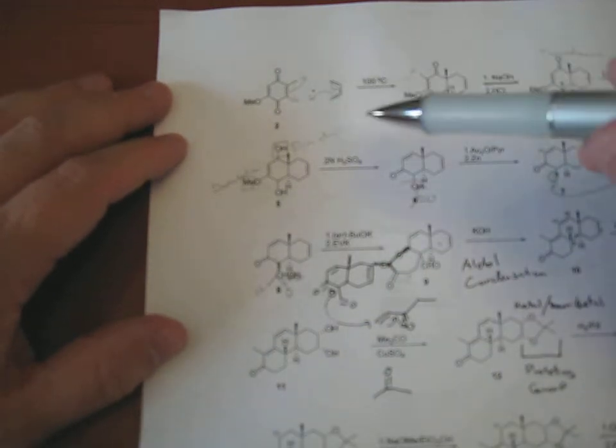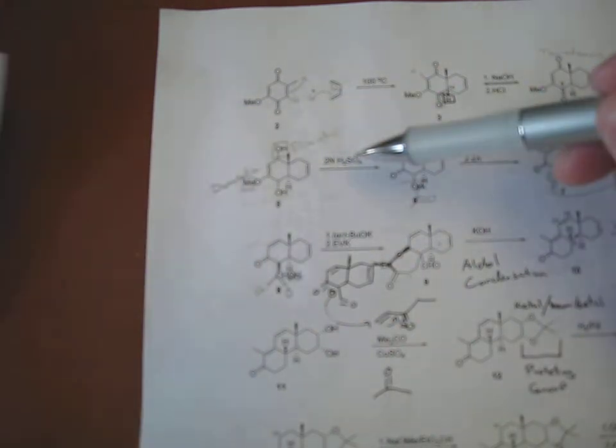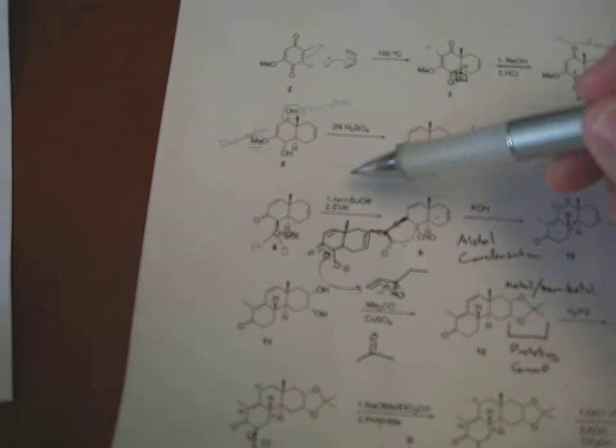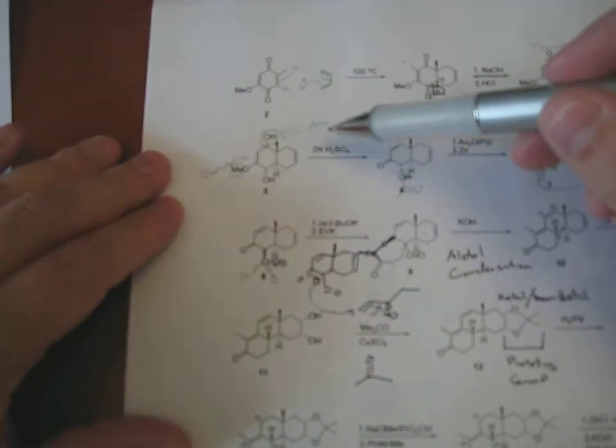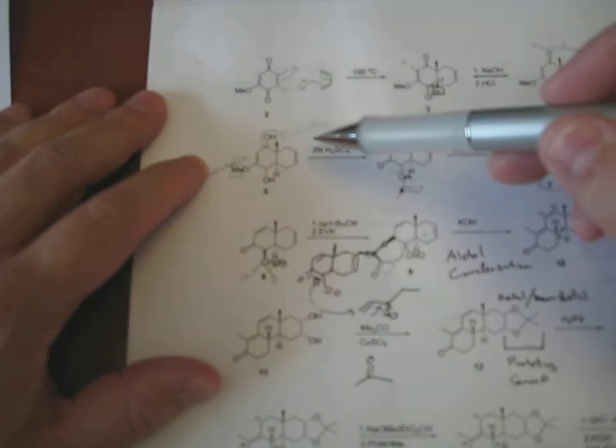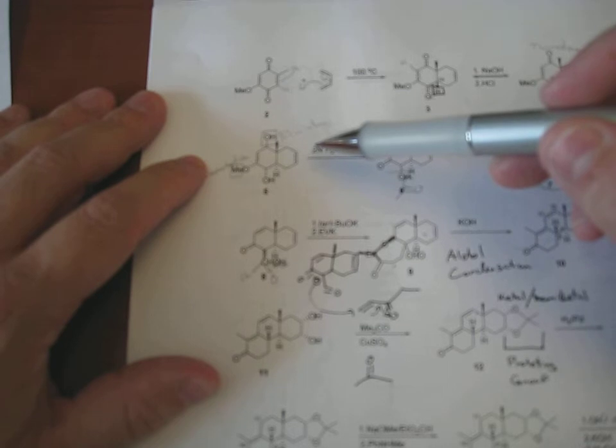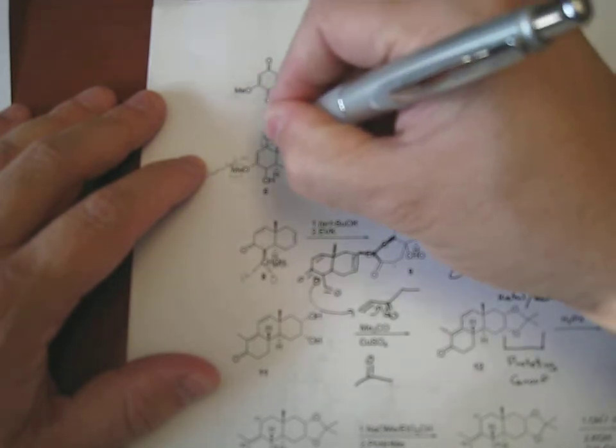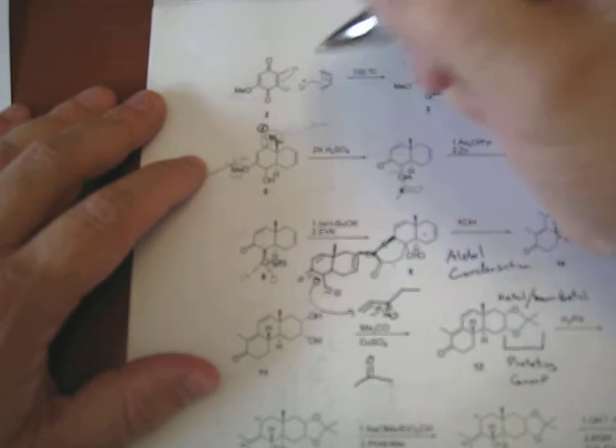So the next question is going from five to six. You're converting an enol ether to an enone by hydrolysis and dehydration. A mechanism. So it's under acidic conditions, so the first step is going to be protonating here.